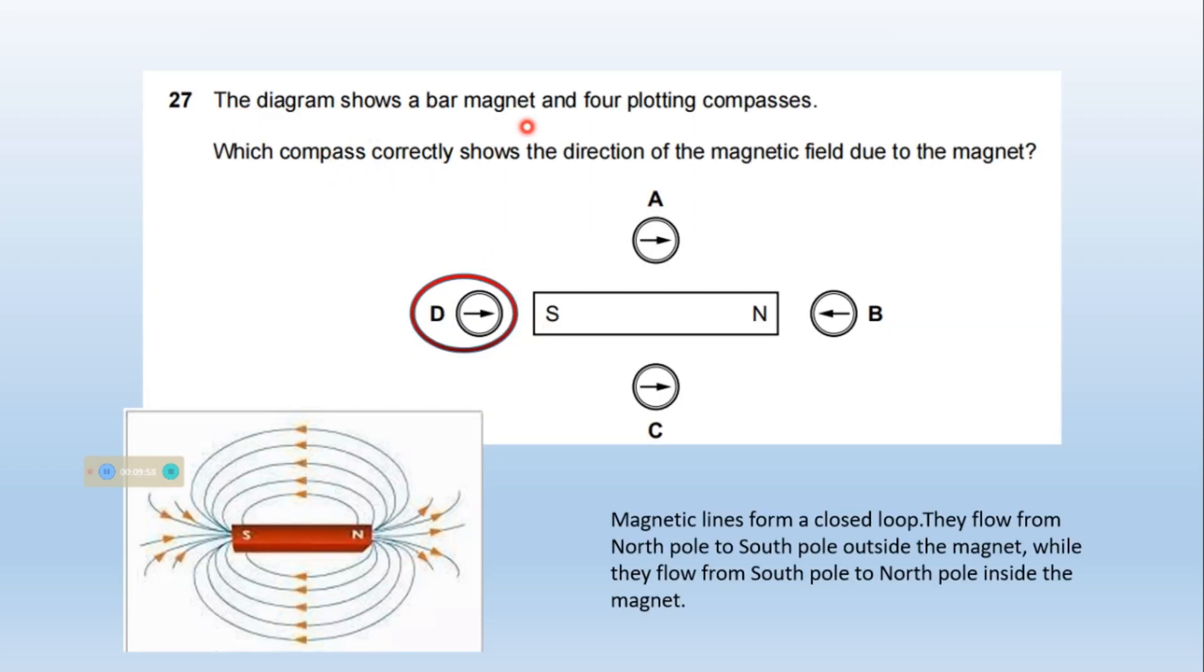The diagram shows a bar magnet and 4 plotting compasses. Which compass correctly shows the direction of the magnetic field due to the magnet? So here a magnet is shown. This is the south and this is the north pole. And magnetic lines form a closed loop. They flow from north pole to the south pole outside the magnet, while they flow from south pole to north pole inside the magnet. Option D is right one. Because the magnetic line must flow from north pole to south pole outside the magnet. So this is showing the correct direction of the magnetic field.